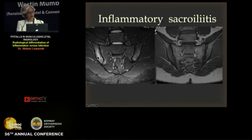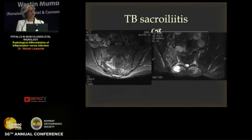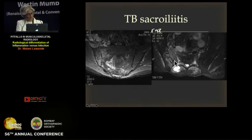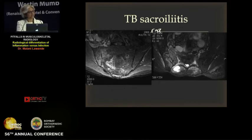Sacroiliitis with marrow edema more on the iliac side and no soft tissue component is inflammatory. We are all taught during residency that unilateral sacroiliitis is TB unless proven otherwise — that's true with X-rays, but not with MRI, because MRI picks up unilateral sacroiliitis in the very early stage even when it is ankylosing spondylitis. When you see a soft tissue component with marrow edema roughly equal on both sides and not more on the iliac side, that is infection. Brucellosis may not have a soft tissue component — my colleagues in Pune and Nasik see that — so we need to keep that in mind.